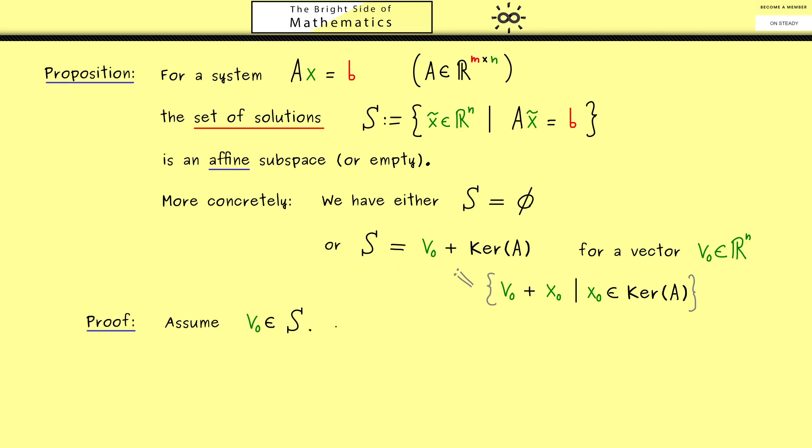Therefore the first conclusion we can make here is that Av_0 = b, because that's the definition of S, that's the definition of being a solution of the system. And now we will define a new vector which we can call x tilde. This should not be a surprise, we define it as v_0 plus x_0. However for the moment x_0 is just an arbitrary vector in R^n.